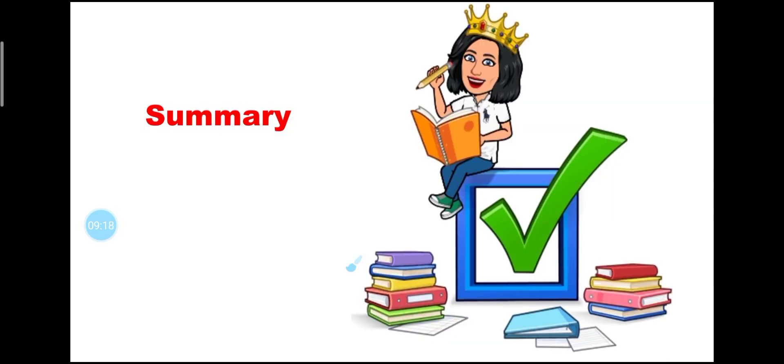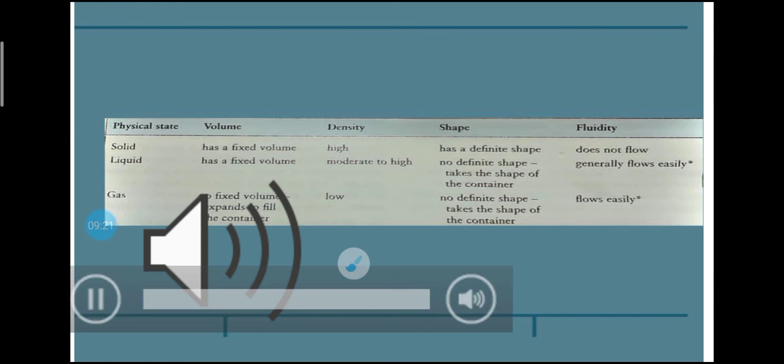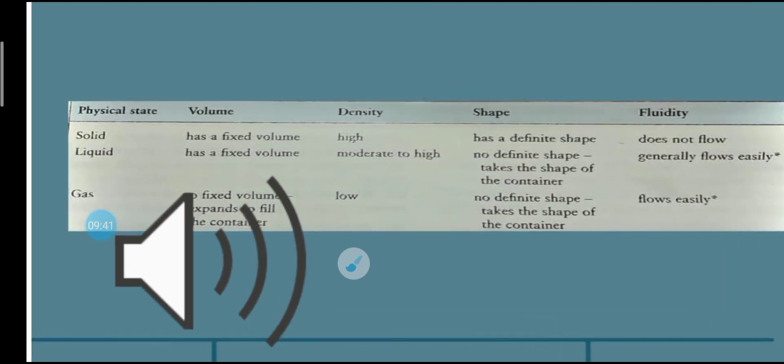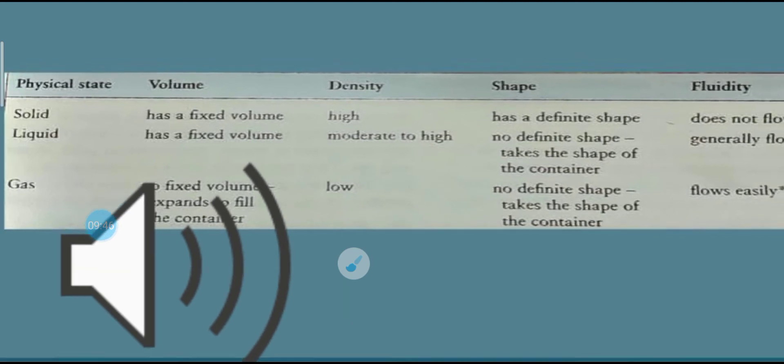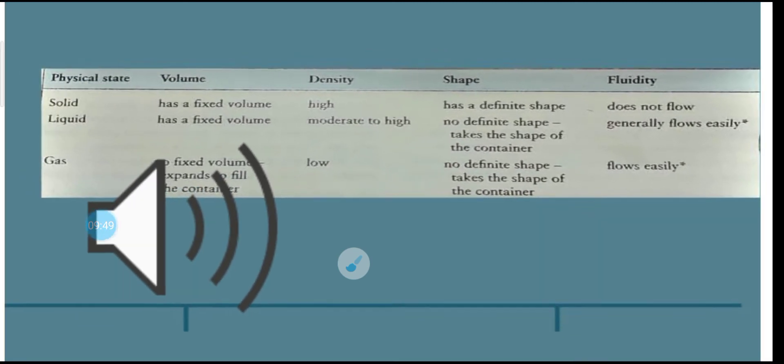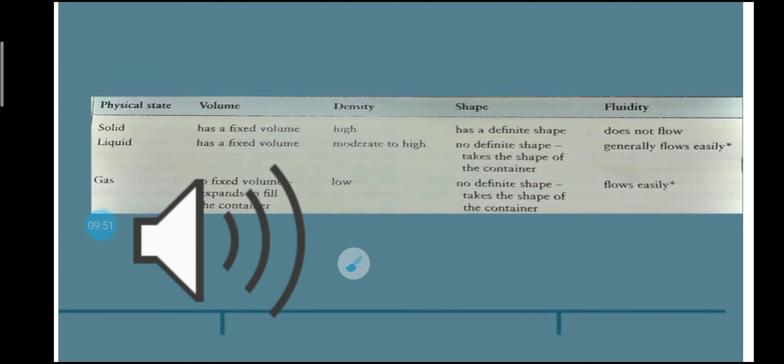Long story short, the table in front of you represents each one of its properties. It states that solids have a fixed volume, high density, a definite shape but don't flow. Liquids have a fixed volume, moderate to high density, no fixed shape and can easily flow. Gases have no fixed shape, expand to fill the container, low density, no definite shape, take the shape of the container and flow very easily. This is a summary of the above slides.